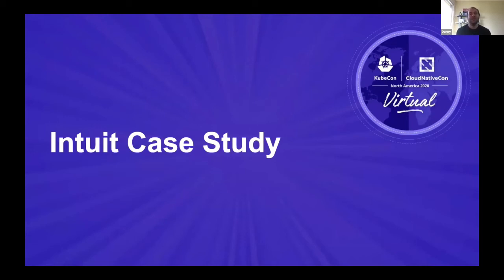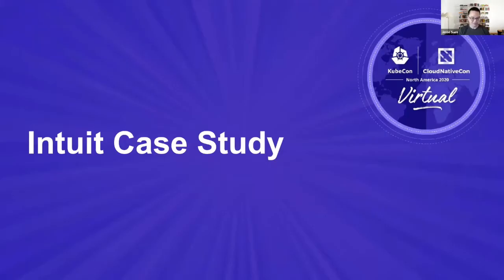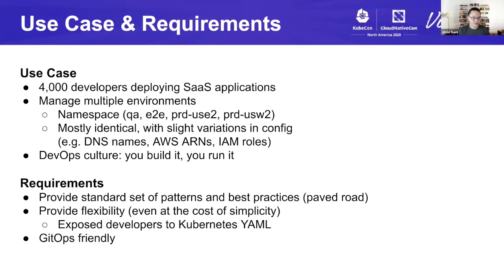Those are all the common approaches we've seen to configuration management for Kubernetes. Now I'll hand it to Jesse, who will give an example of how Intuit has done configuration management for all of its developers. So now we'll get into a case study of Intuit's approach. Our use case is that we have 4,000 developers deploying mostly SaaS applications. These developers are managing multiple environments, and for us, an environment equates to a Kubernetes namespace. These environments are mostly identical with slight variations in their config — different DNS names, different AWS resources, and different IAM roles and privileges. Intuit promotes a DevOps culture of you build it, you run it.